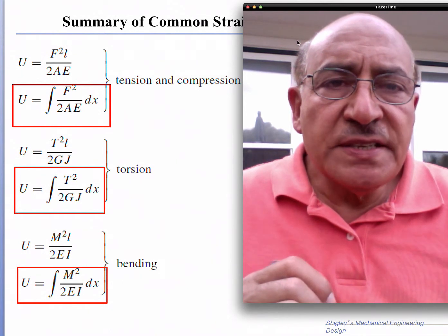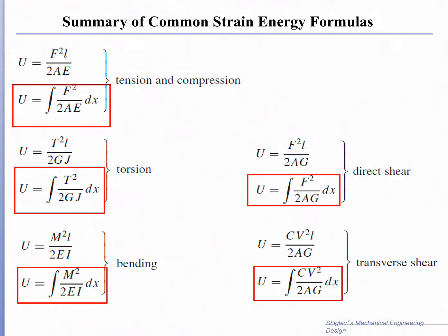As we've learned in the past, the elastic energy stored depends on the mode of stress: tension, compression, torsion, bending, direct shear, or transverse shear. It takes a form we derived before, in which we have the integral of F² over 2AE for tension and compression — F² over 2AE is the energy stored per unit length — and when integrated over length dx, we get the total energy in the member.